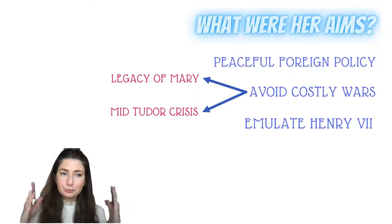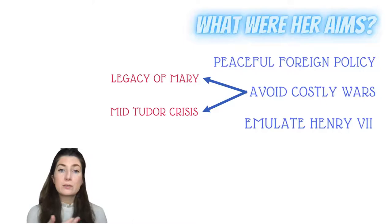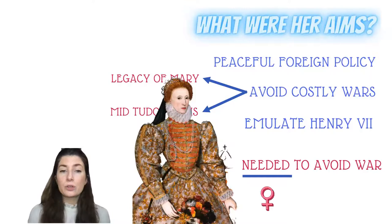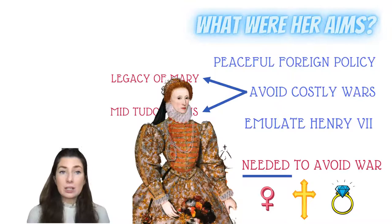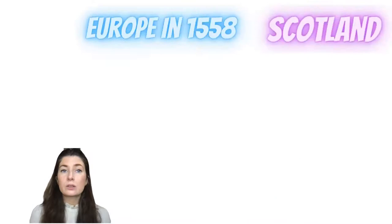Moving back to Elizabeth — I did film another video on this previously, so this is the second one in that series. Just to go back over her aims: she wants to be peaceful, she wants to avoid costly wars, she wants to emulate her grandfather Henry VII. There is additionally a greater need for her to avoid war because she is a woman, she is a Protestant within a very Catholic Europe, and she is unmarried — so Elizabeth needs to be very careful with her foreign policy as she is significantly vulnerable compared to other Tudor monarchs.